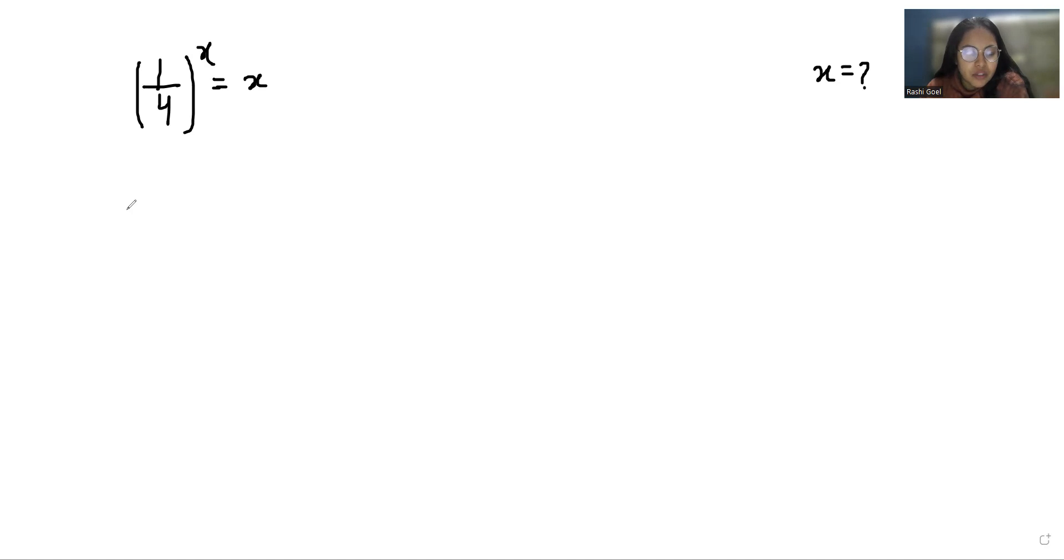Let's start with today's video solution. We can write this as 1^x / 4^x = x. 1^x is 1, so 1 / 4^x = x, or we can write it as 1/x = 4^x.